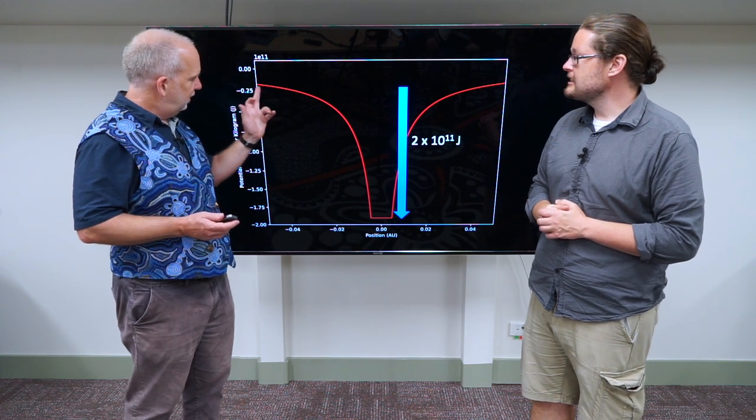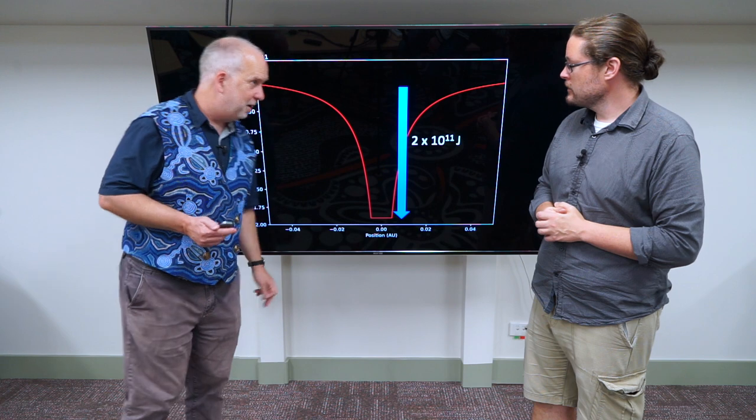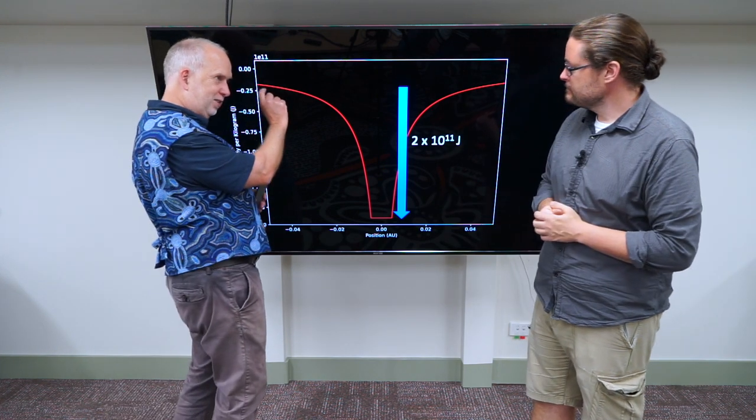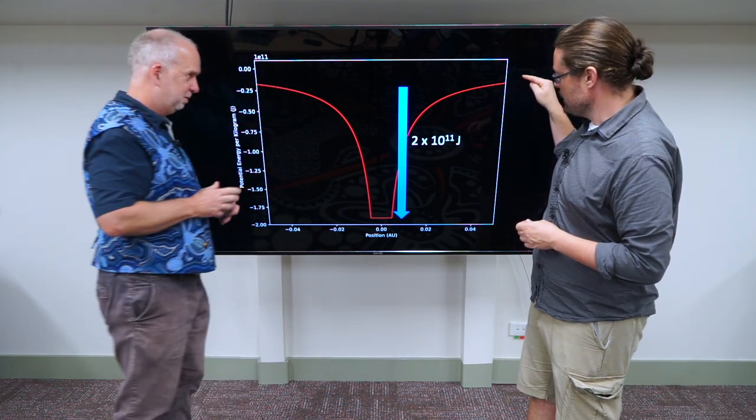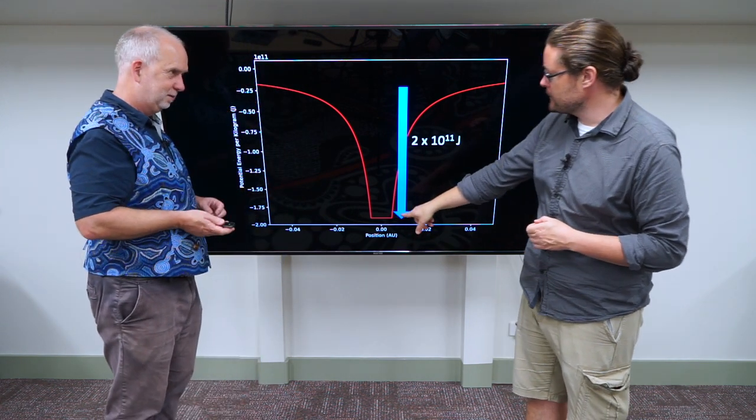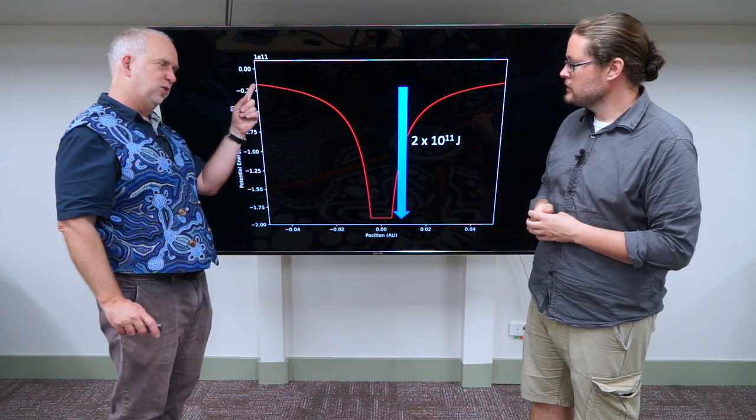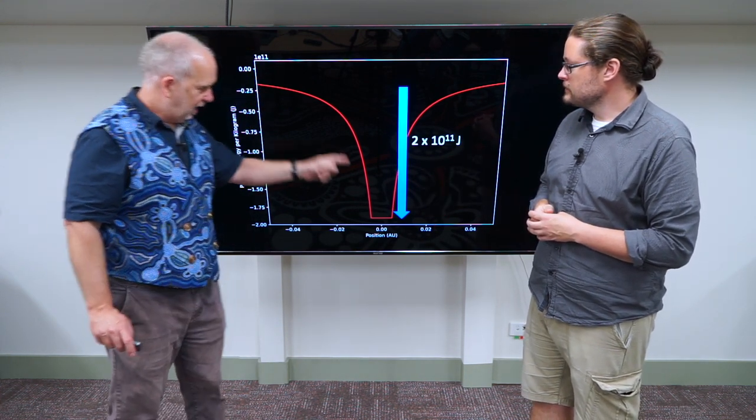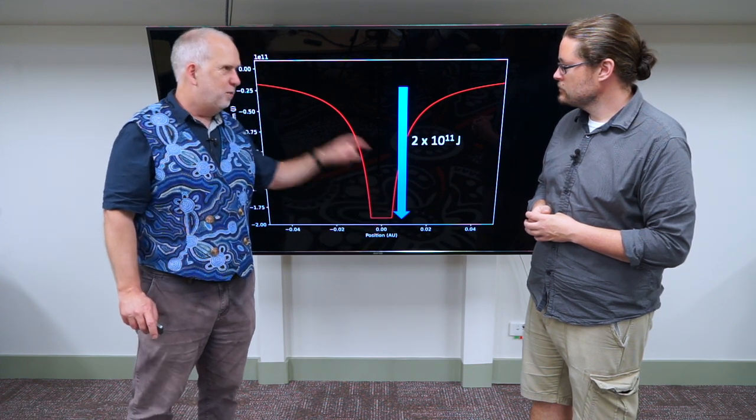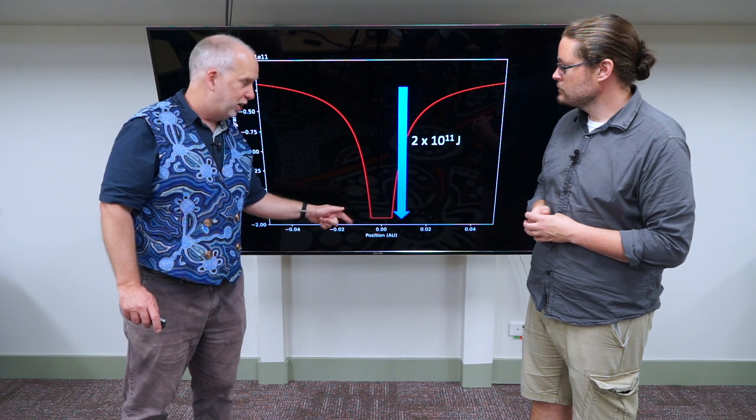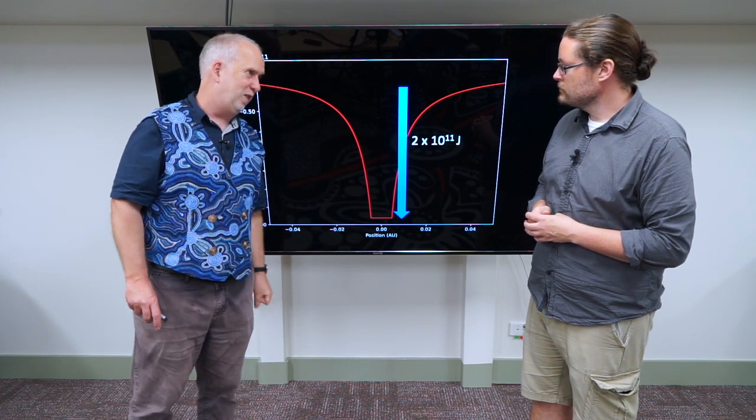So this is a close-up of the potential energy curve of the sun. This is telling you how much energy a kilogram has, depending on where it is. So if it's way up here, compared to getting to the surface of the sun, that's the potential energy difference. Basically, if you take something that's a long way away from the sun and move it to the sun's surface, you liberate a lot of potential energy, about 2 by 10 to the 11 joules for dropping one kilogram into the sun.